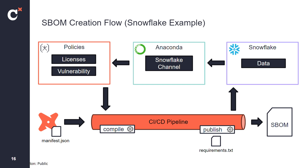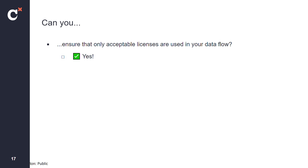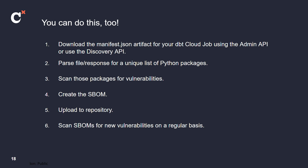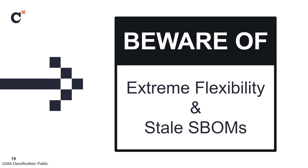So that way, when there's the next Log4j or the next critical vulnerability, you can know exactly where that's happening and if your dbt projects are affected. Now that we have the SBOM, we can ensure only acceptable licenses are used, make sure we're not using packages with critical vulnerabilities, and have an SBOM created to represent the system — meeting whatever future regulatory requirements come into place. To summarize the process: generate state for the latest commit by running something in dbt Cloud, pull down manifest.json or hit the dbt discovery API, parse out the Python packages, compare them with your vulnerability lists, create the SBOM, upload it, and scan.